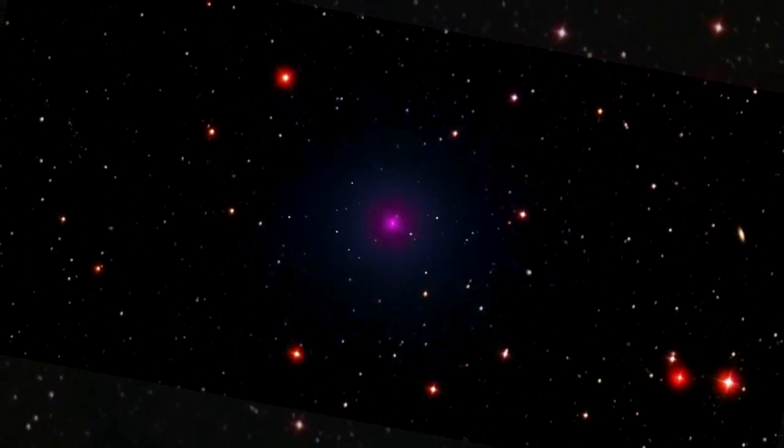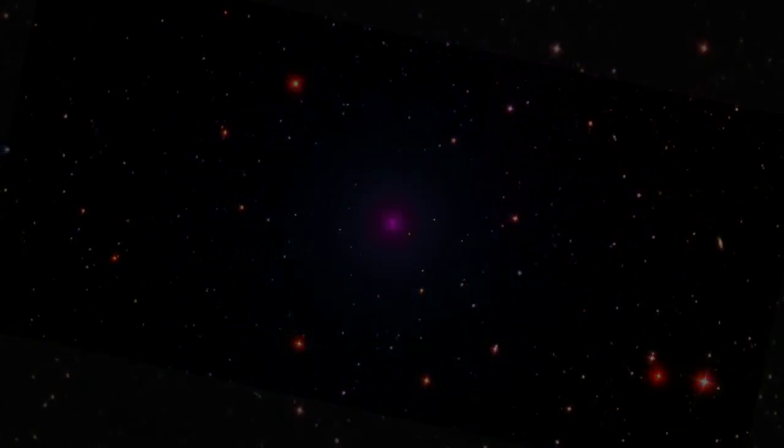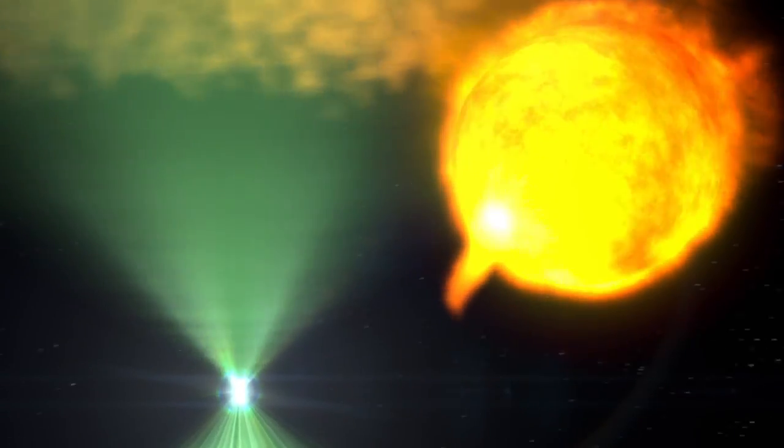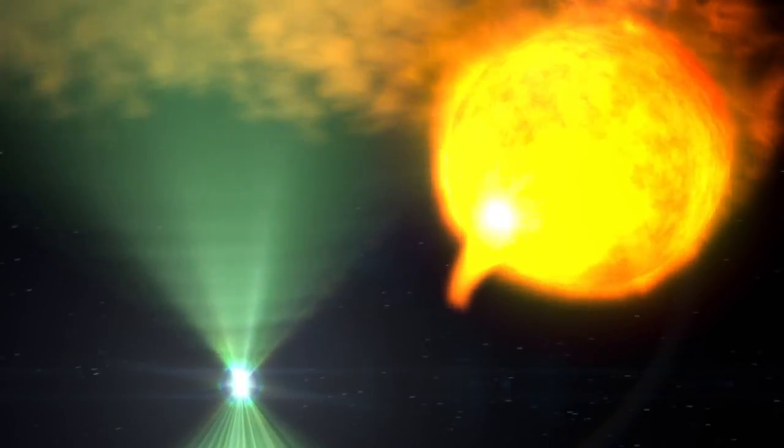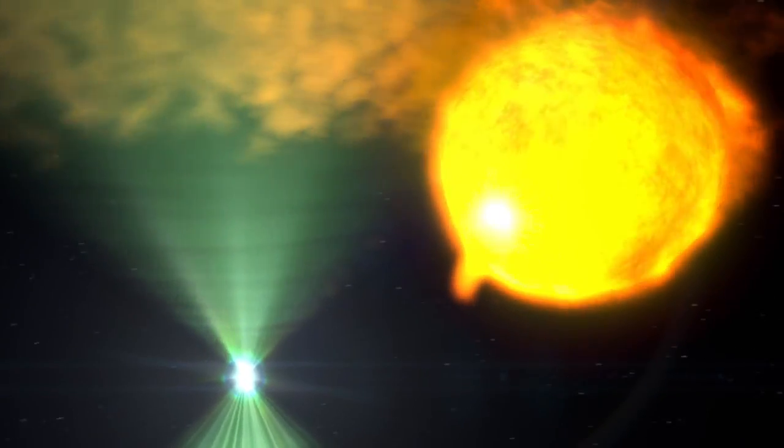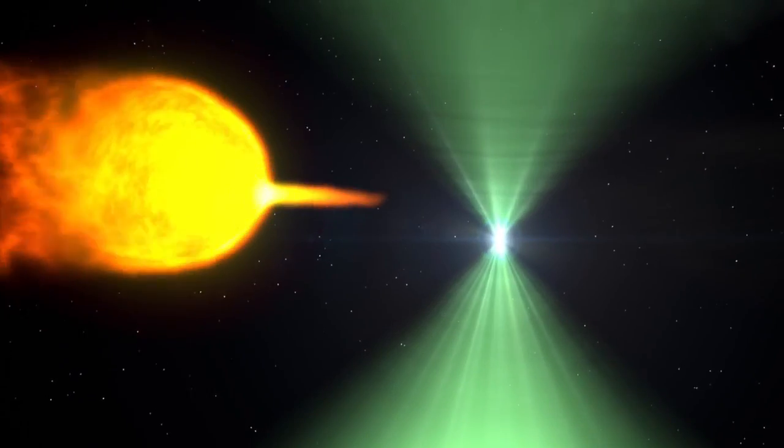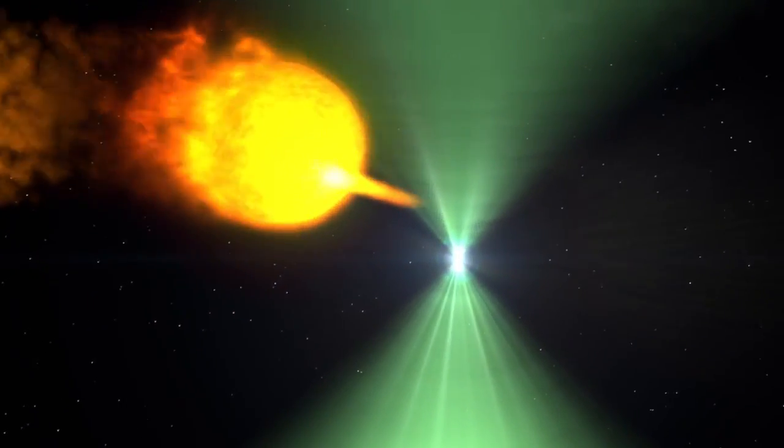Here's what researchers think may be happening. The two stars orbit so closely that gas from the Sun-like star overflows and a stream falls toward the pulsar. But the pulsar produces an outflow of its own. Its spin and magnetic field accelerate charged particles to near the speed of light, creating a high-energy wind.